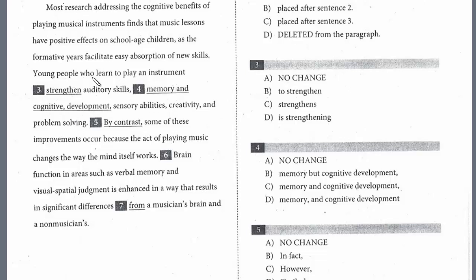So question three: 'Young people who learn to play an instrument strengthen.' This looks good. We have the infinitive 'to play' and we've got 'strengthen,' a verb. The subject is plural and 'strengthen' agrees with that. If you look at the choices, we're not going to use two infinitives — 'to play' and 'to strengthen.' 'Strengthens' with the S would suggest a singular subject, but it's plural with 'people.' And 'is strengthening' — well, 'is' is singular and it's also passive, so it's wrong for a couple of reasons. So this one is no change, A.